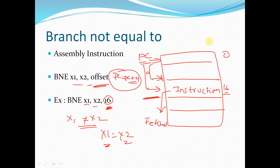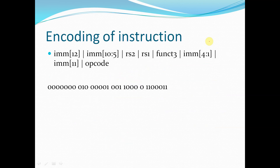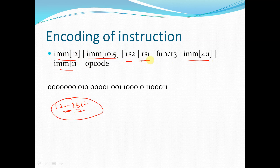For BNE, the instruction format is the same as BEQ: immediate bits 12, 10 down to 5, 4 down to 1, and 11 — the 12-bit value is split across the instruction. RS2 and RS1 are the source register addresses, and funct3 differentiates between instruction types such as BEQ, BNE, BGT, BLT, and so on, along with the opcode.